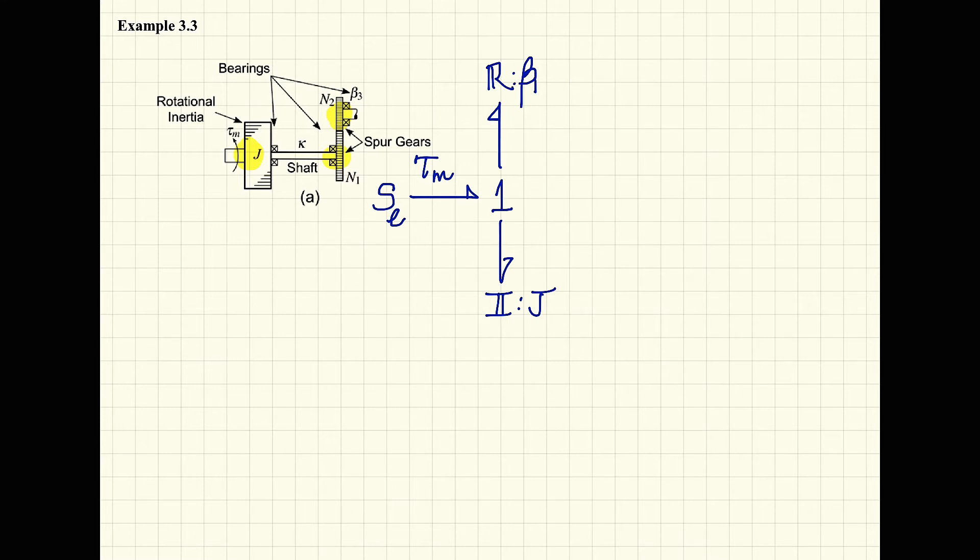From here, we have another distinct angular velocity at the end of the shaft, where we have the first spur gear and a bearing. So I will place a one junction here. I will also place an R element to represent the bearing, and this one should have a damping constant beta 2.